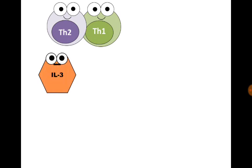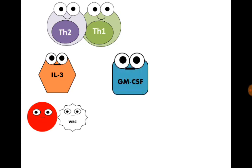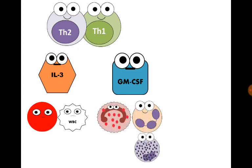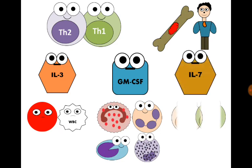Hematopoietic cytokines: interleukin-3, produced by T helper cells, stimulates red blood cell and white blood cell production. Granulocyte-monocyte colony-stimulating factor promotes production of granulocytes and monocytes. Bone marrow and the thymus gland produce interleukin-7, which promotes B and T cell growth.